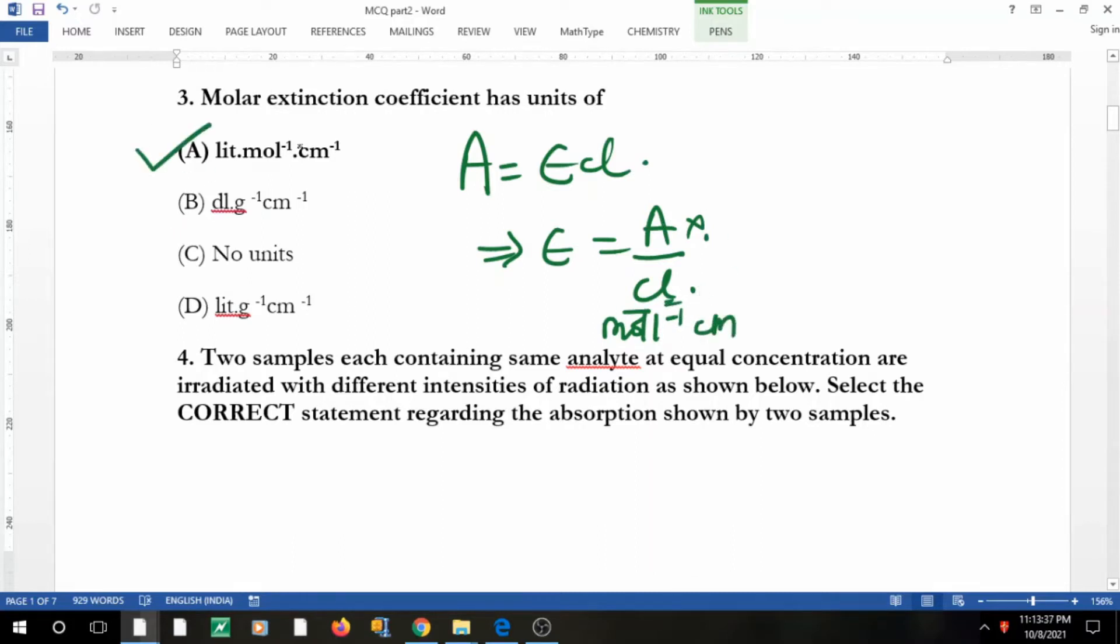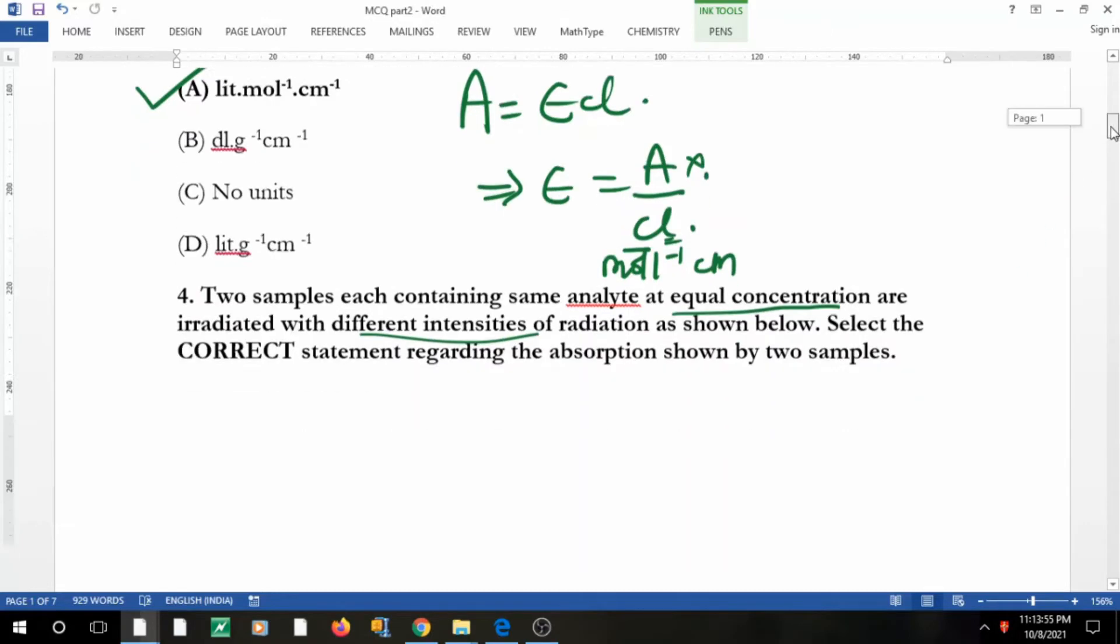So if I reverse this, I'll get liter mole inverse centimeter inverse. Coming to: two samples each containing same analyte at equal concentration are irradiated with different intensities of radiation. Select the correct statement regarding the absorption shown by two samples.